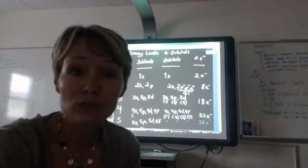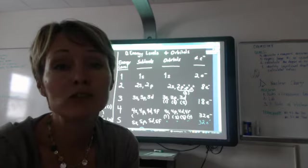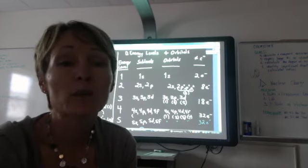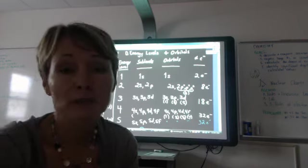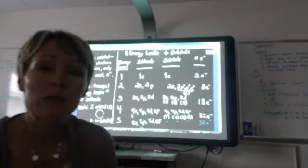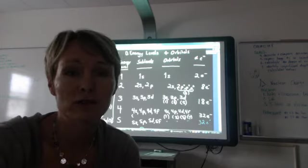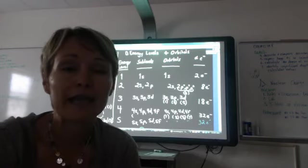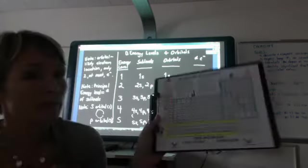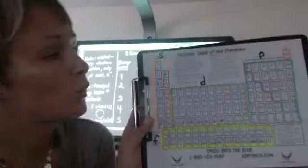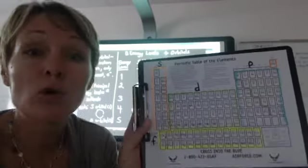The last orbital is the f orbital. And don't worry about the shape of the f orbitals. But what you do have to remember is there are seven f orbitals. Now, make sure you write this down in your notes and repeat it to yourself many times over, but the maximum number of electrons that you will find in any orbital is two. I'm going to show you on the periodic table what section of the periodic table corresponds to each orbital.